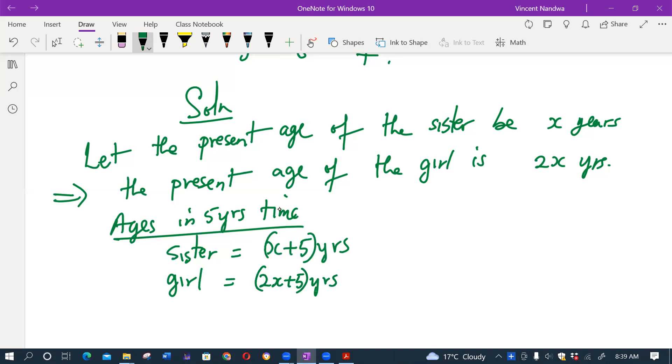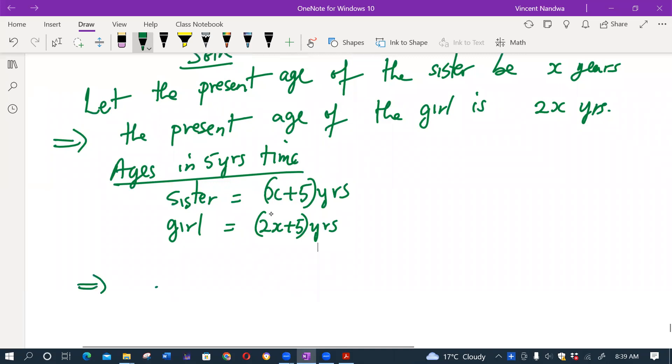We have been told that the product of the ages five years from now will be 375. So this means (x + 5) times (2x + 5) should equal 375.